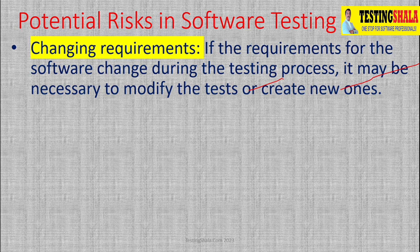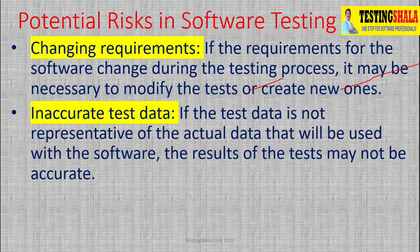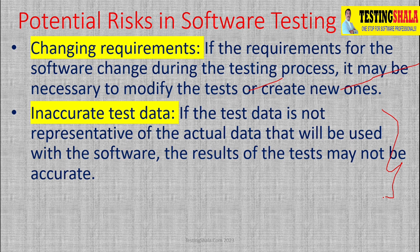If we follow the change management processes effectively, we can avoid this. The next kind of risk we may anticipate is inaccurate test data. If the test data we have created is not up to the mark of production data, then that becomes very challenging. Because of that, we should try to create or mimic production-like test data that would give the right test results for the overall software testing.